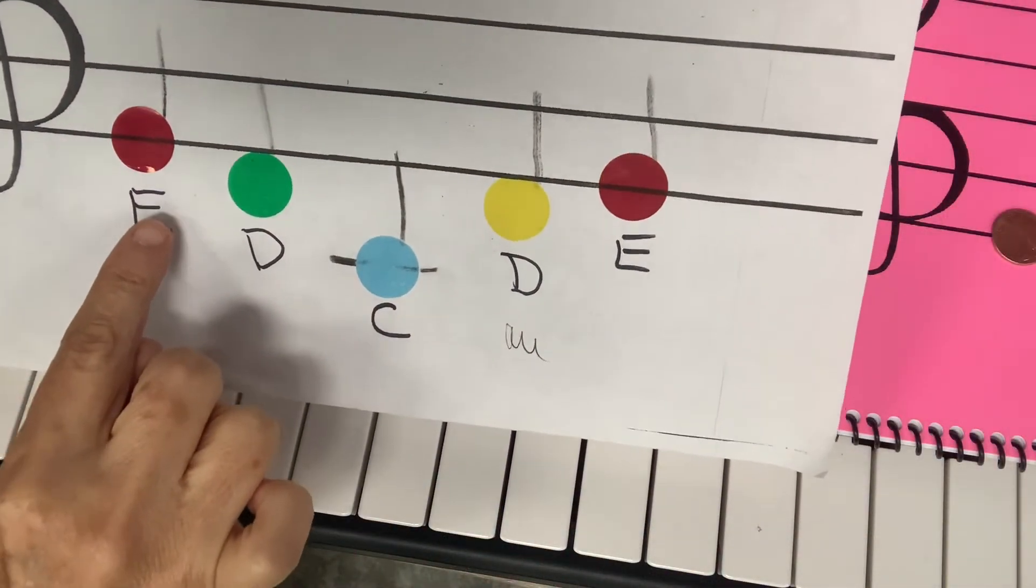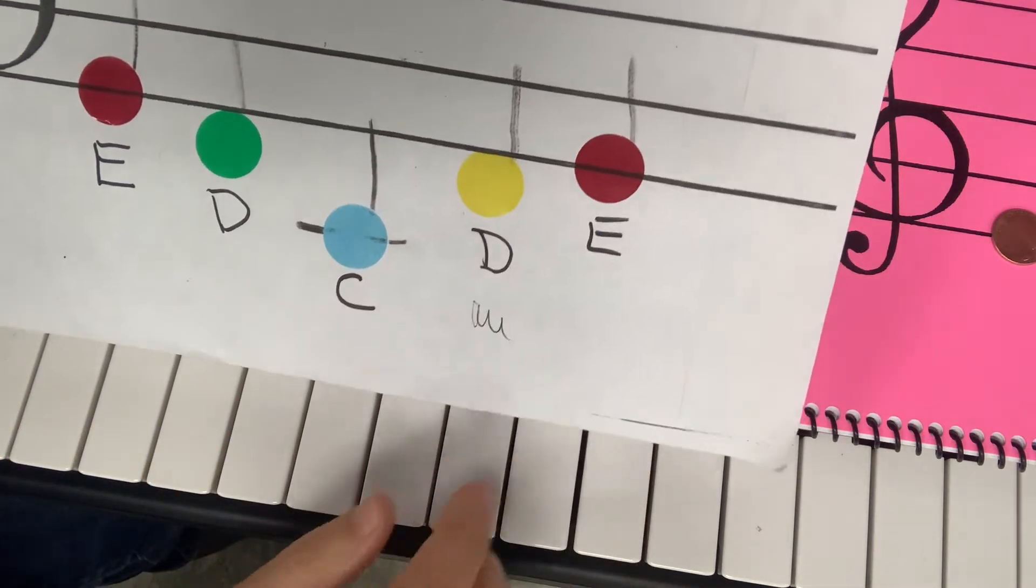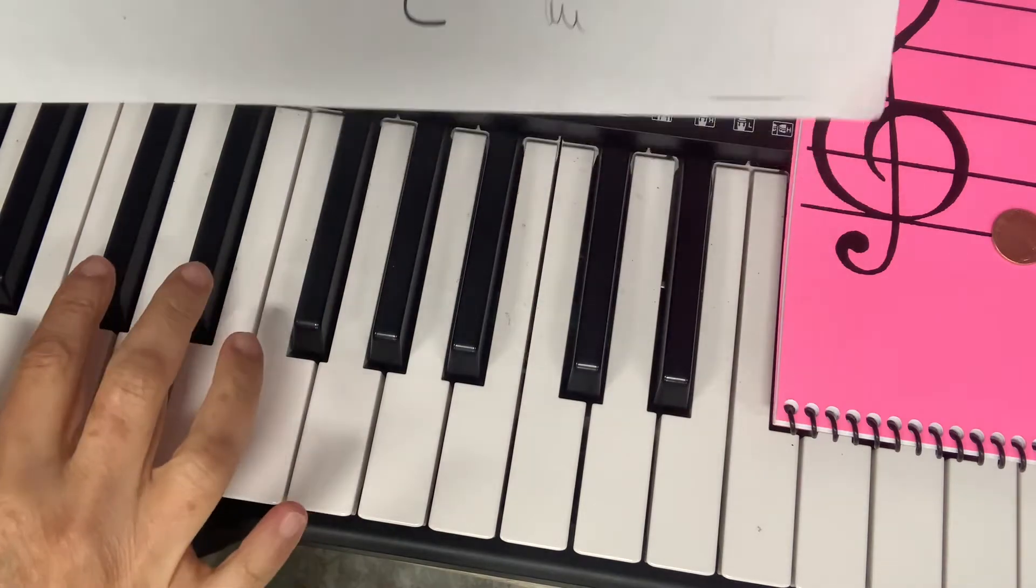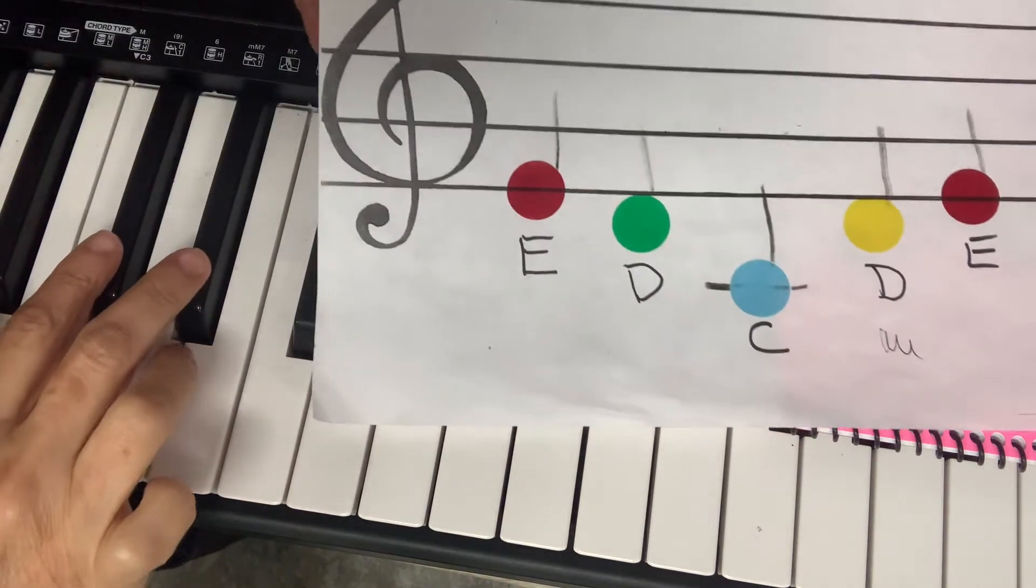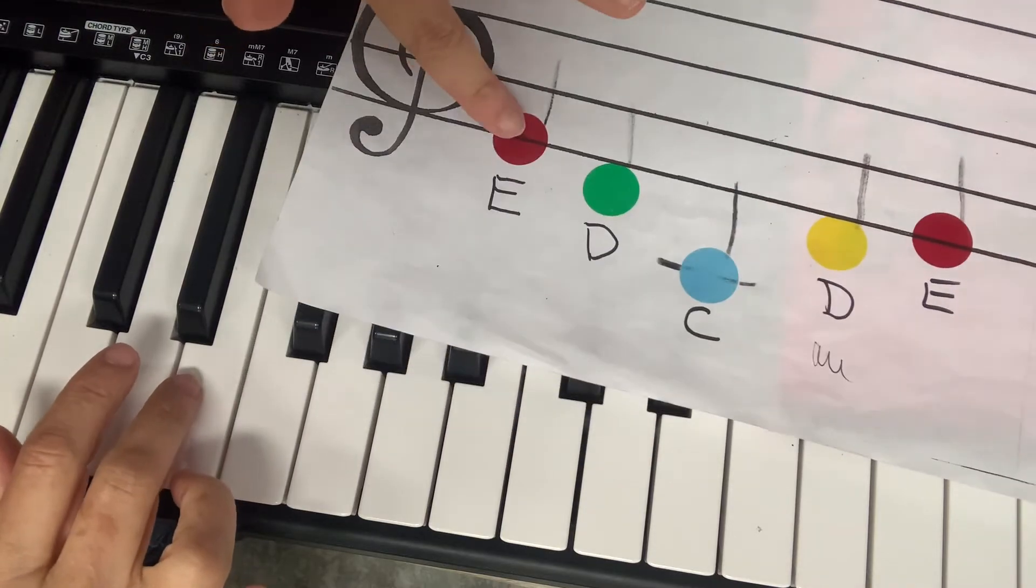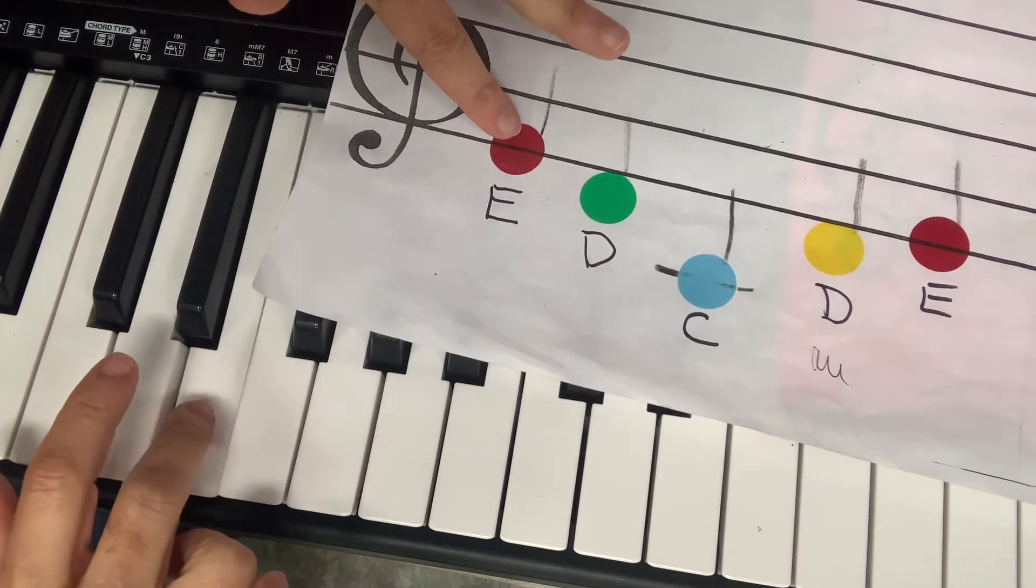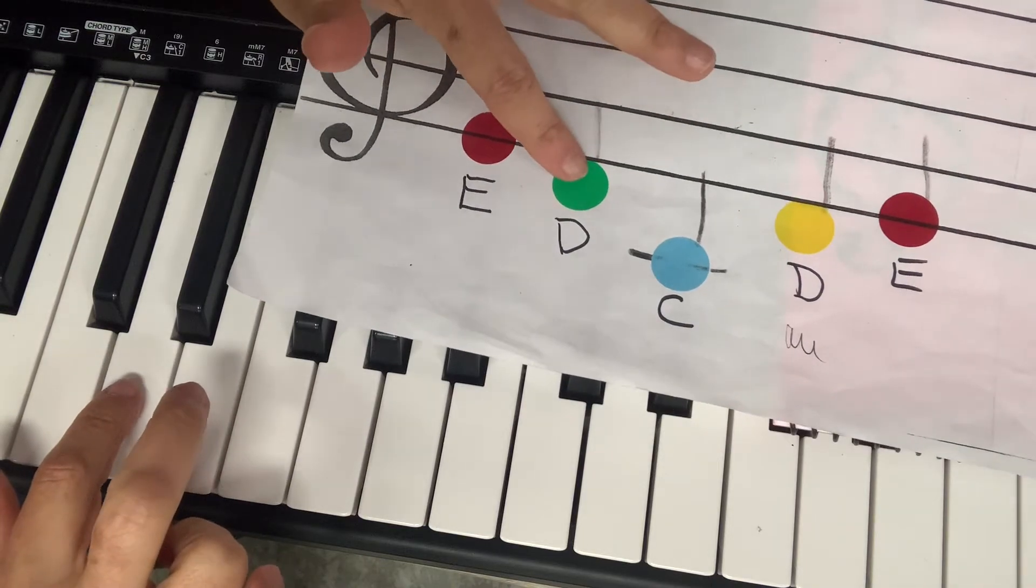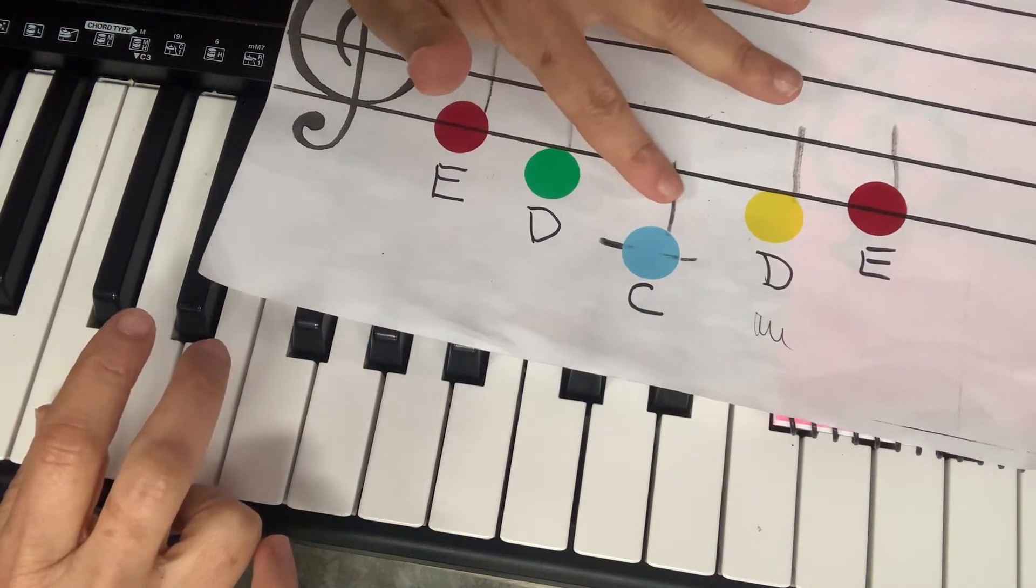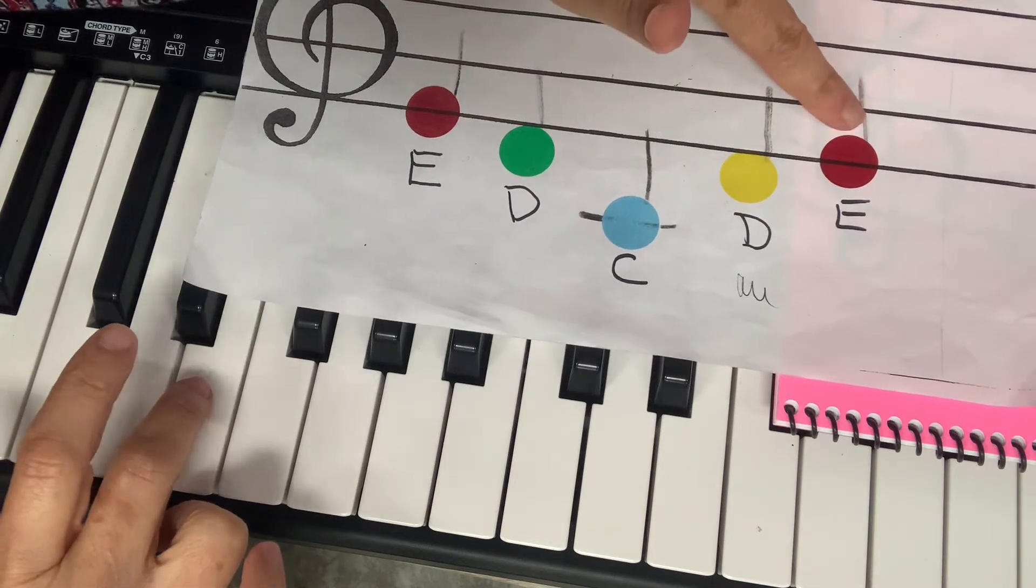This is the song that I made, right? E, D, C, D, E. I can play it on piano. Here are my two black keys. Here is C, here is D, here is E. So all I have to do is play the notes that I wrote. This one is E, D, C, D, E.